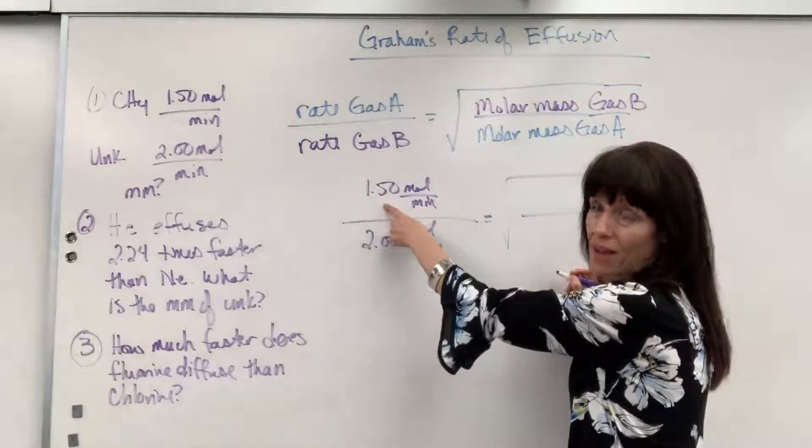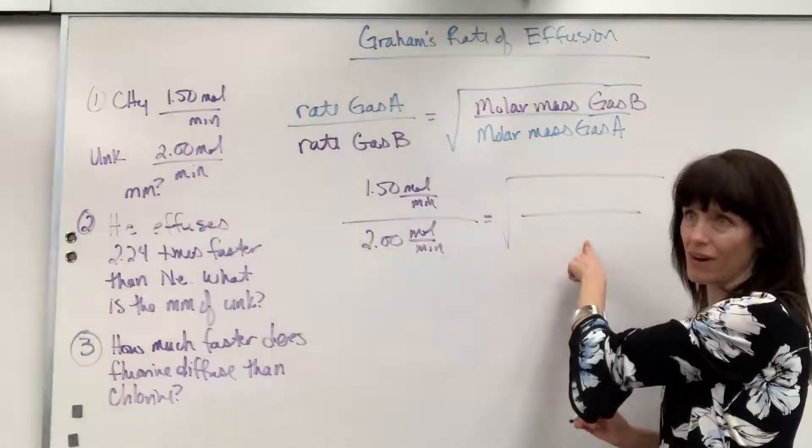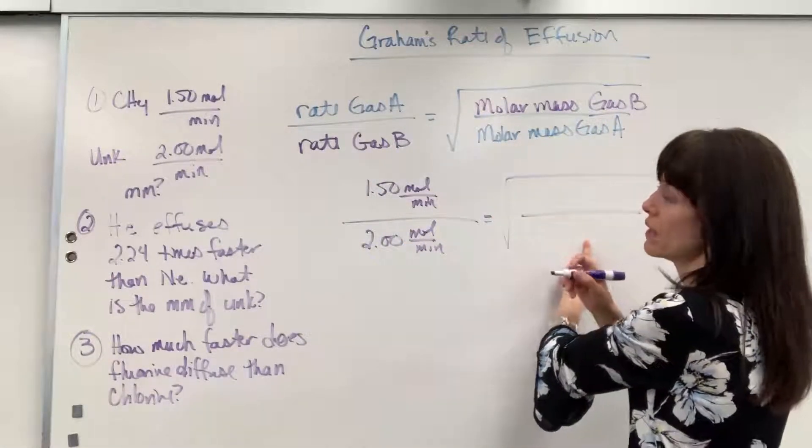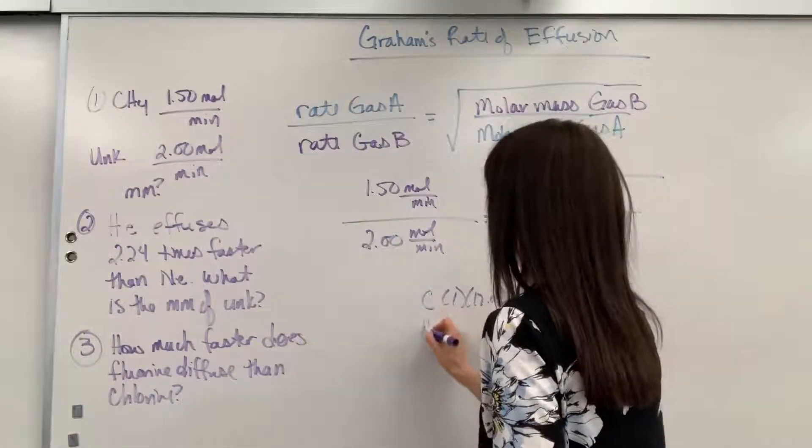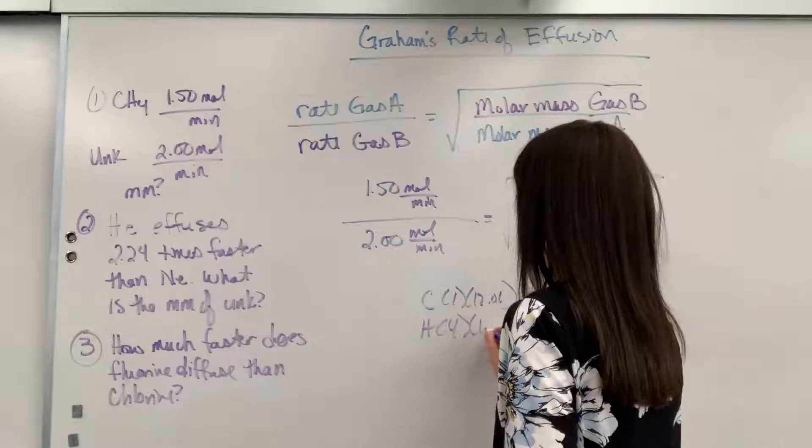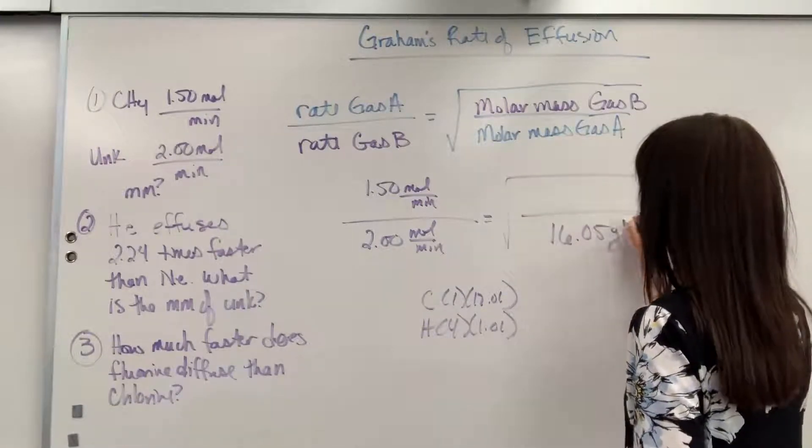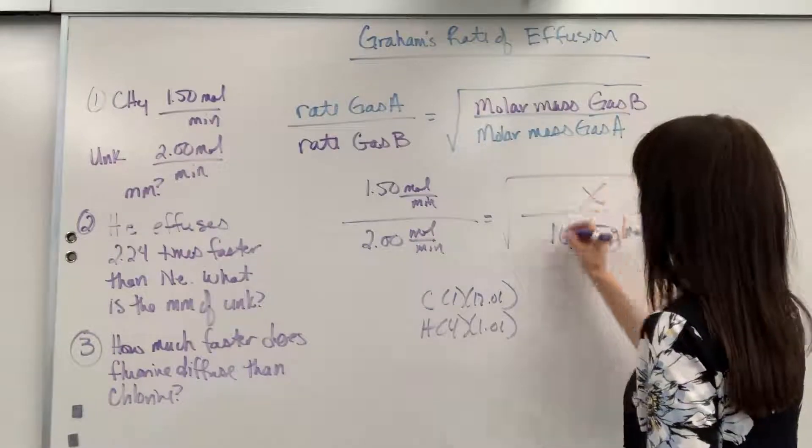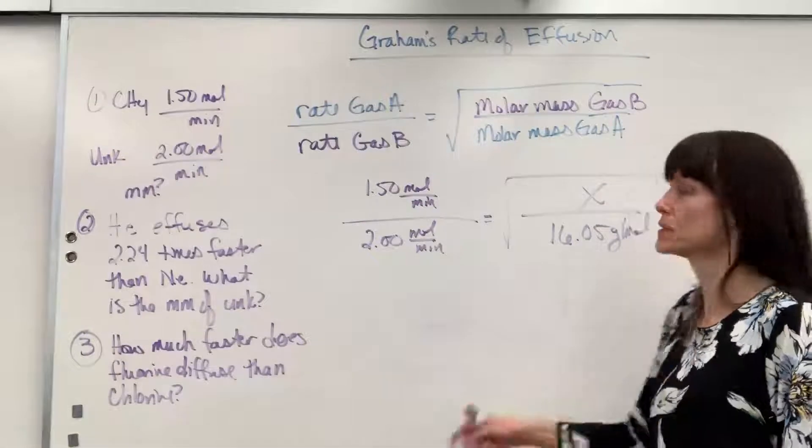Now, be really careful and watch how I do this. This was methane. So, the molar mass of methane goes on the opposite side of the fraction. Molar mass of methane, carbon is 12. And hydrogen, we've got 4 of those, is 1.01. That's going to be 16.05 grams per mole.